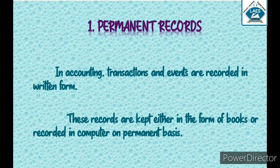The first objective is permanent records. In accounting, transactions and events are recorded in written form. Accounting transactions and events are recorded in written form or in computer form — not orally. These records are kept either in the form of books or recorded in computer on a permanent basis.